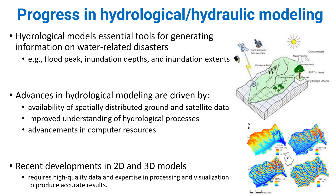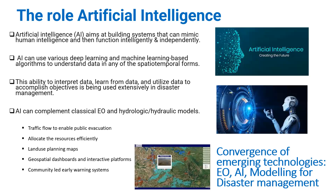So where does artificial intelligence come in? AI aims at building systems that can mimic human intelligence and function intelligently and independently. AI can use various deep learning and machine learning-based algorithms to understand data in spatial and temporal forms. This ability to integrate data, learn from data, and analyze data to accomplish objectives is being used extensively in disaster management.